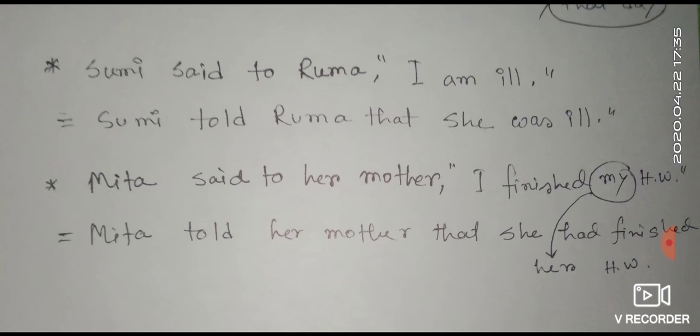Then: 'Mitha said to her mother, I finished my HW.' The indirect speech will be: 'Mitha told her mother that she had finished her HW.' Here 'my' has become 'her,' showing the possessive form change.